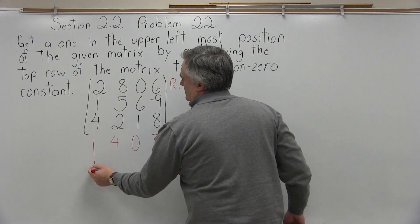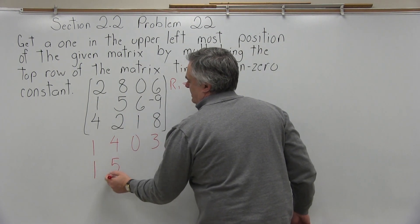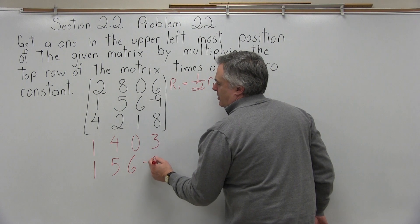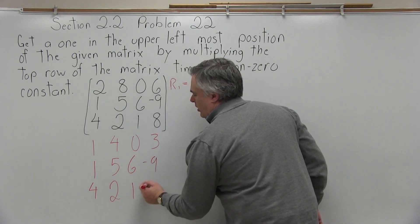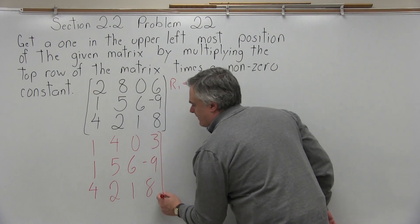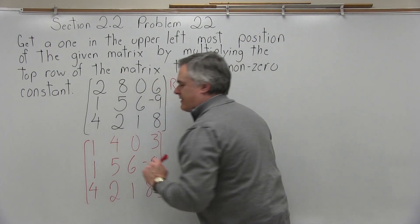And then the other two rows won't change. The middle row will stay 1, 5, 6, negative 9 and the bottom row will also stay the way it is, 4, 2, 1, 8.